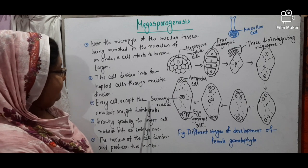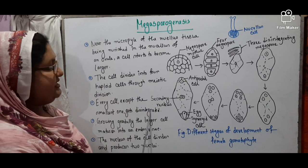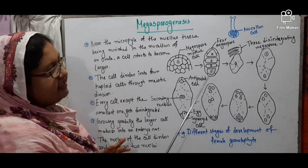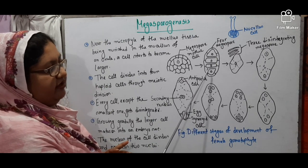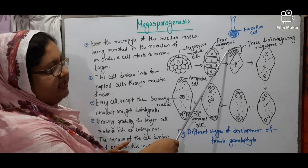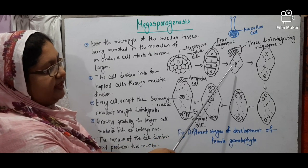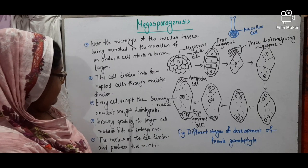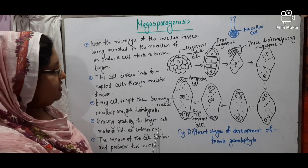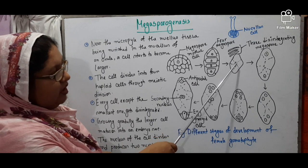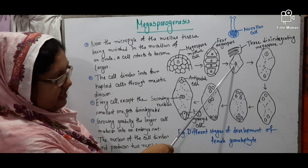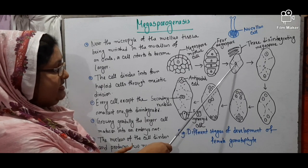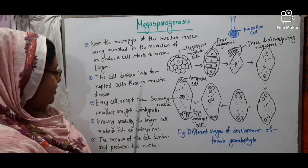Every cell except the lowermost one gets disintegrated. Among these four cells, only the lowermost cell remains alive and the rest of the three cells become disintegrated. Growing gradually, this larger lowermost cell matures into an embryo sac.